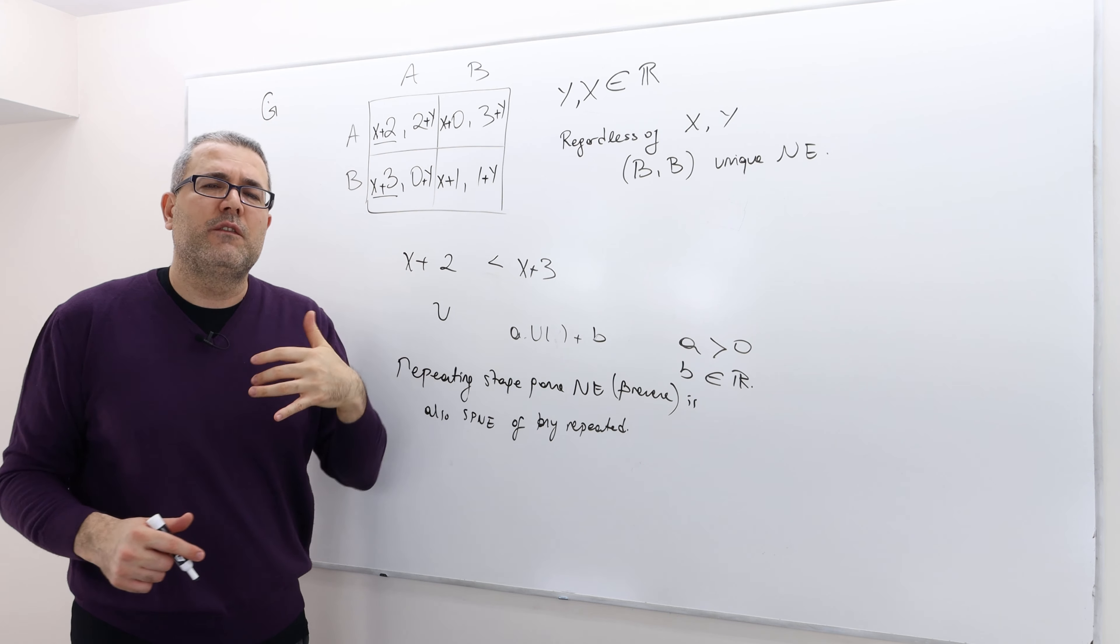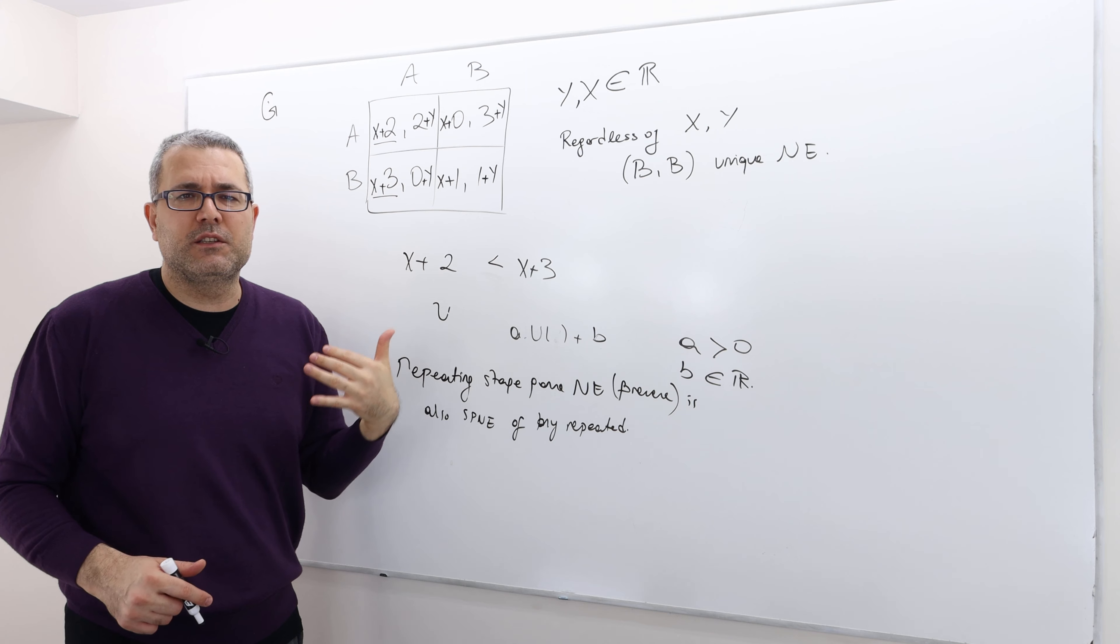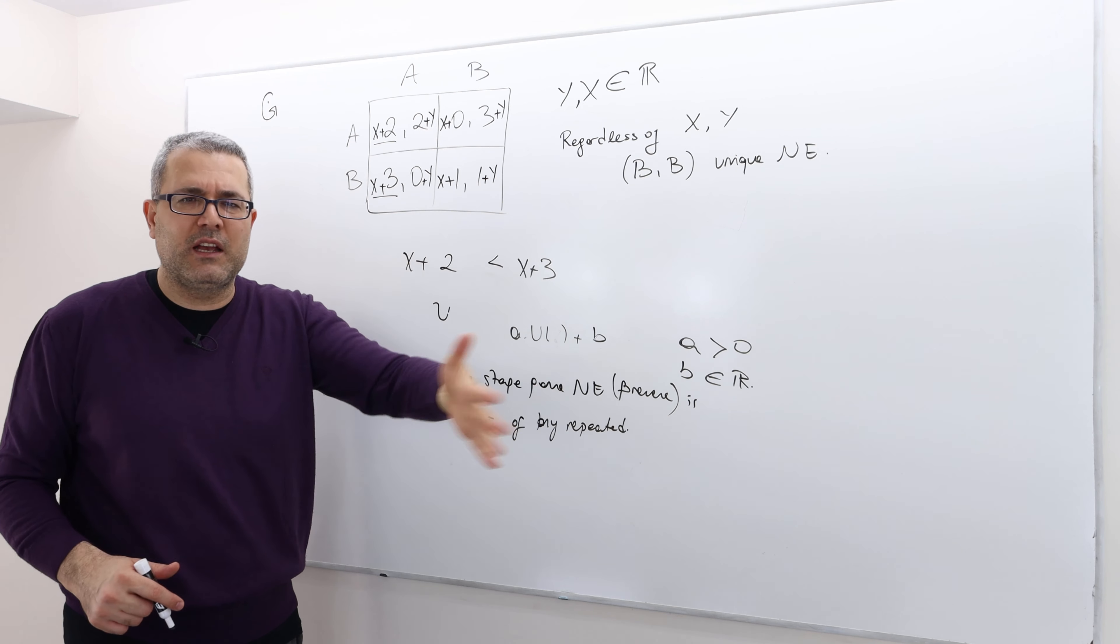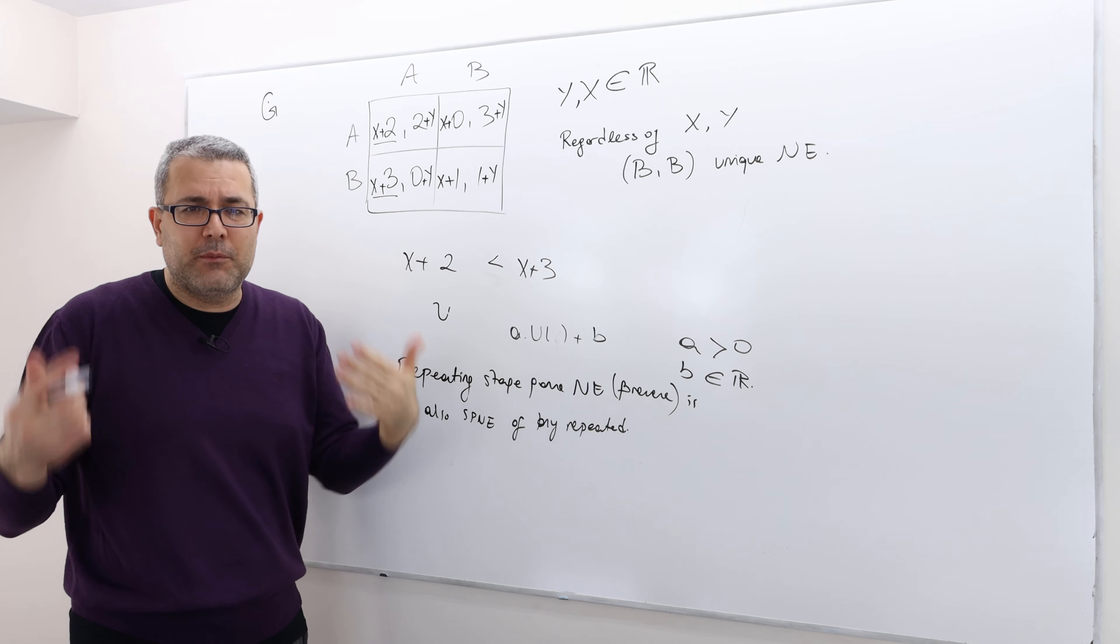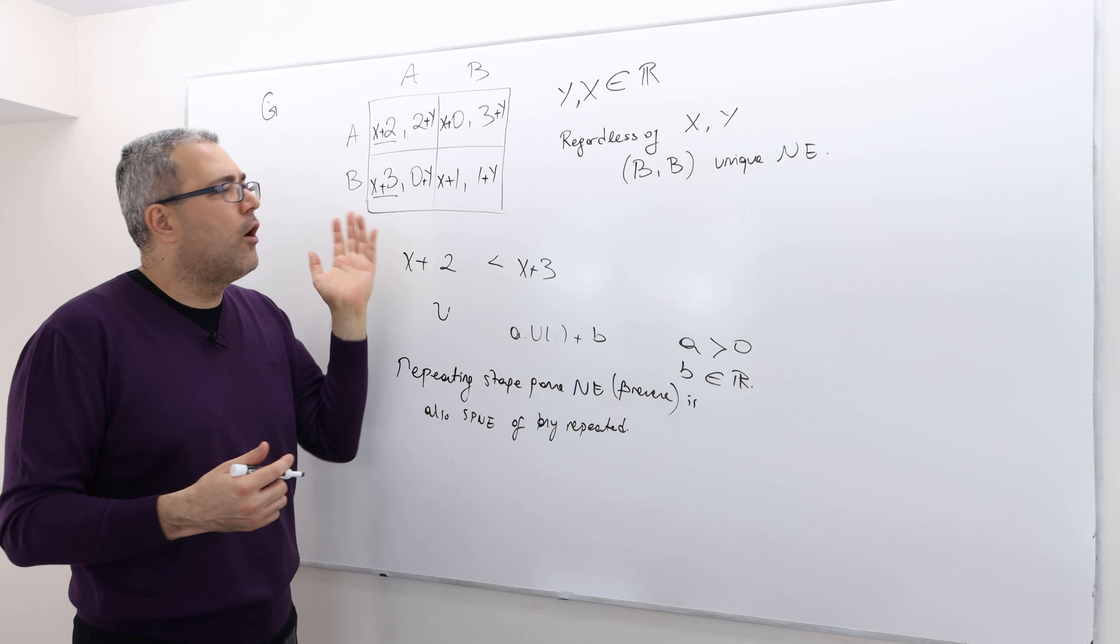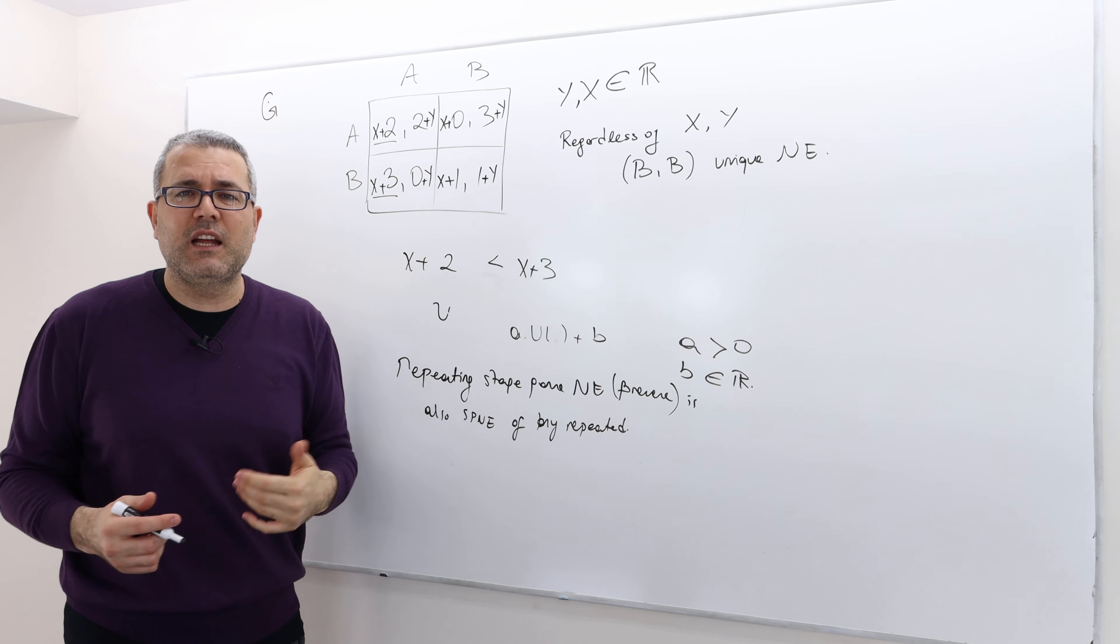So the unique Nash equilibrium is BB or defect defect. Well, repeating this forever, if it is an infinite horizon or repeating this as long as the game continues, is the Nash equilibrium and the subgame perfect Nash equilibrium of this repeated game. Well, why is that so?